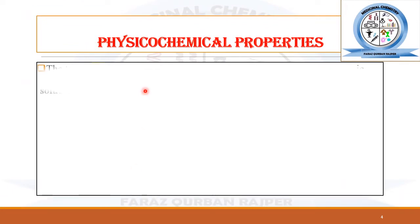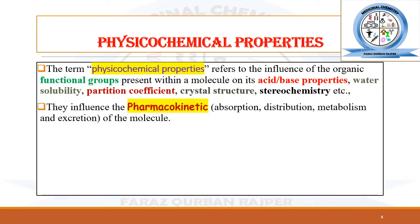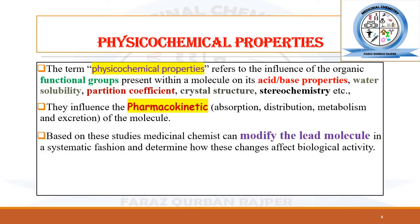The physicochemical properties of a drug molecule — such as acid-base properties, water solubility, partition coefficient, crystalline structure, and stereochemistry — are all affected by the type of functional groups present. If we modify the functional group for the synthesis of a new drug candidate or lead molecule, its physicochemical properties will be affected, which in turn affects the pharmacokinetic properties: absorption, distribution, metabolism, and excretion. The medicinal chemist must modify a lead molecule with certain functional groups to optimize physicochemical and pharmacokinetic properties.